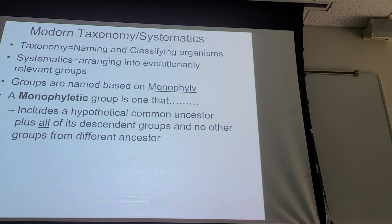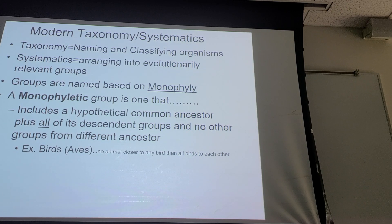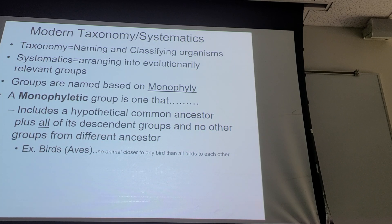The key rule is: common ancestor plus everybody that came after — you can't exclude anybody. Birds is widely accepted as a monophyletic group, meaning every animal in that group is what we call a bird. There's nothing more closely related to any bird that isn't also in that group — they're all each other's closest relatives.